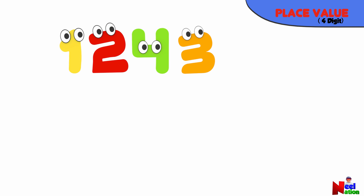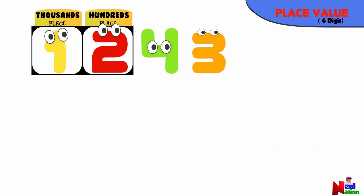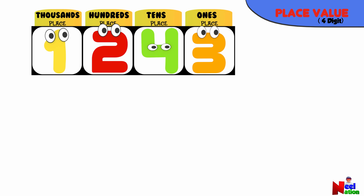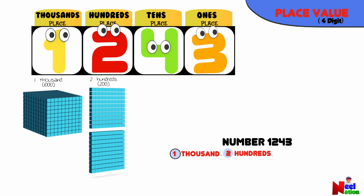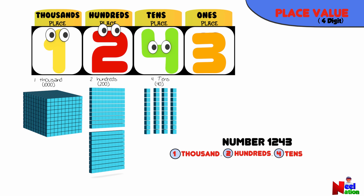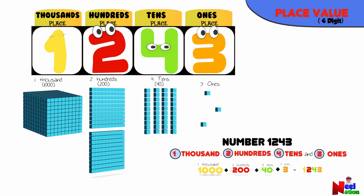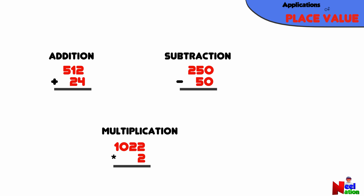Let's see how place value works for a four-digit number. In a four-digit number, the leftmost digit represents the thousands place. The second digit from the left represents the hundreds place. The third digit from the left represents the tens place. And the rightmost digit represents the ones place. In this number, the digit 1 is in the thousands place with a place value of 1000. The digit 2 is in the hundreds place with a place value of 200. The digit 4 is in the tens place with a place value of 40, and there are 3 ones. This makes a total of 1243. Understanding place value is crucial for performing various mathematical operations such as addition, subtraction, and multiplication, as it helps you break down and work with numbers more effectively.